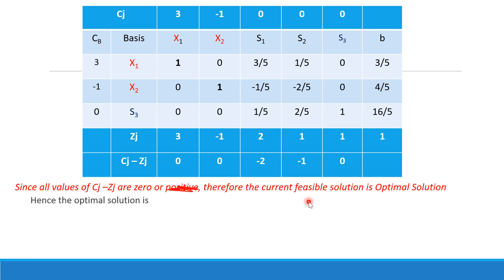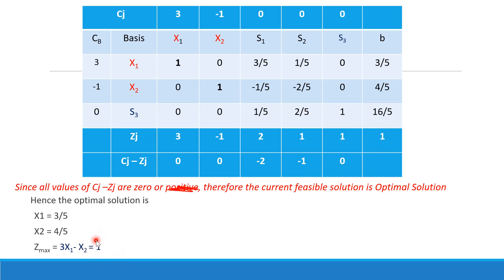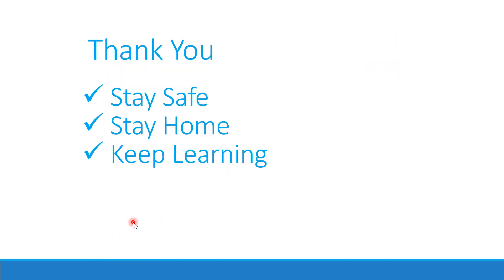Since all Cj - Zj values are zero or negative, the current feasible solution is optimal. The basic variables are x1 and x2 with values x1 = 3/5 and x2 = 4/5. Substituting these into the objective function gives Z max = 1. So the maximum value of Z is 1. Thanks for watching — stay home, stay safe, keep learning, and stay healthy.